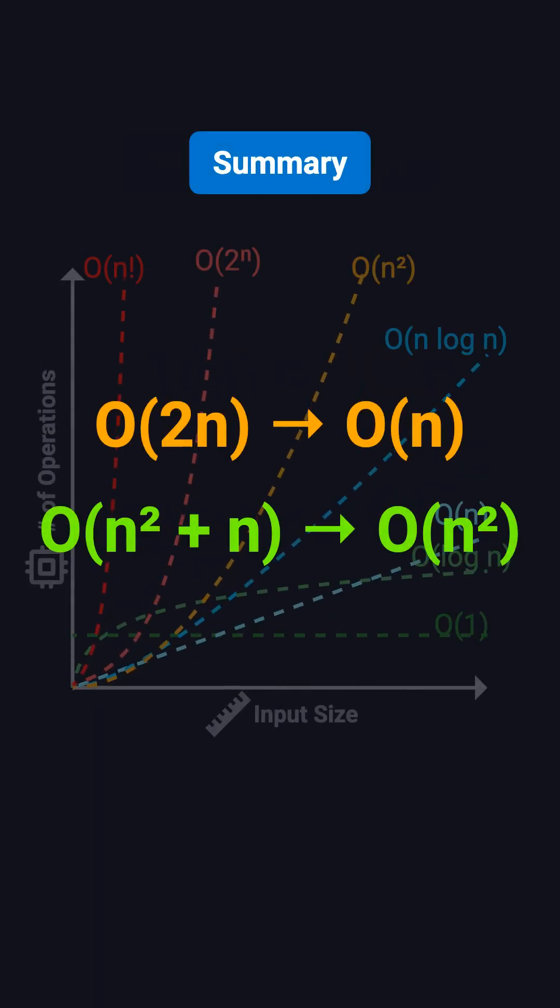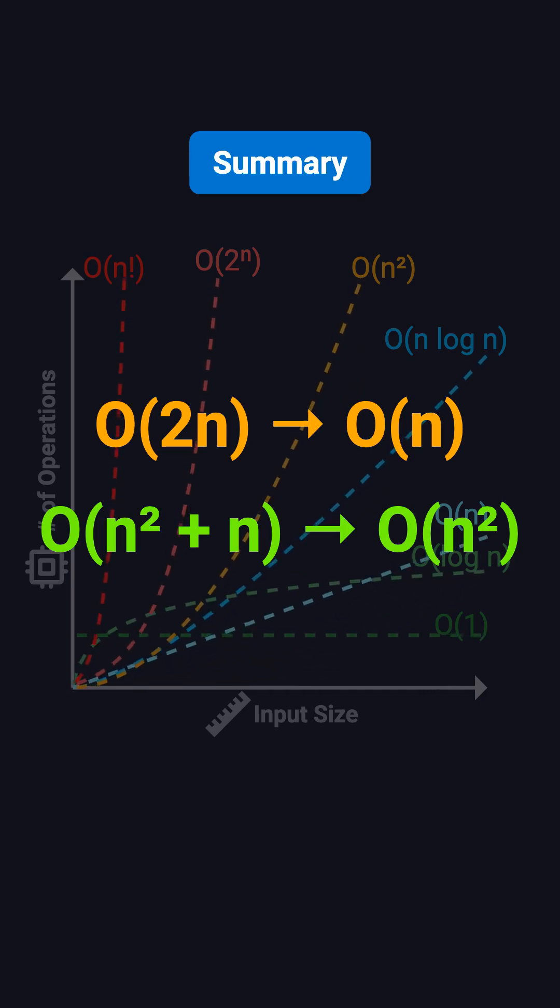To summarize, these two key properties of Big O help us simplify analysis and focus on the core complexity of an algorithm. Constant factors can be removed because they don't affect growth trends. Non-dominant terms can be dropped because they don't significantly affect performance at large scales. Mastering these two properties allows you to quickly evaluate algorithm efficiency without worrying about the exact number of operations.